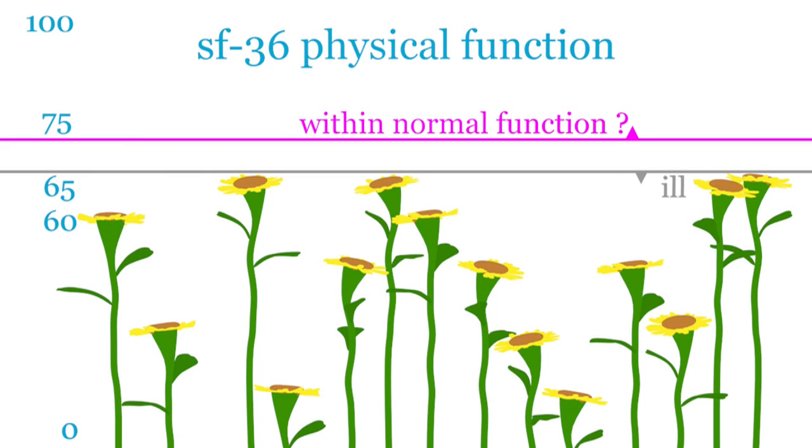At the end of the trial they reported that 30% of patients were assessed as being within normal function. And it's this figure that has been widely reported along the lines of 30% of patients were cured. 30% is less than they expected, but still worthwhile, so you might wonder why we are concerned.